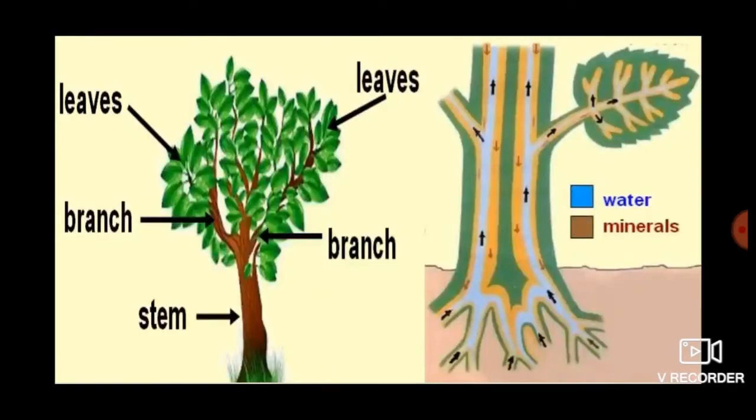Now kids, important functions of the stem are: it provides support for the plant and keeps it upright. It allows the leaves to reach sunlight that they need to produce food. It carries food from the leaves to all parts of the plant.